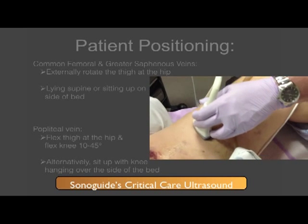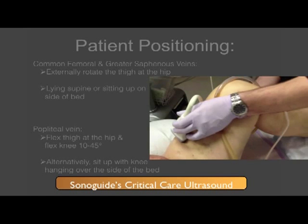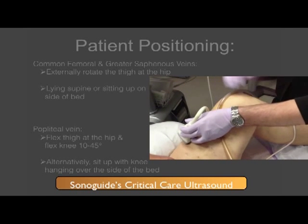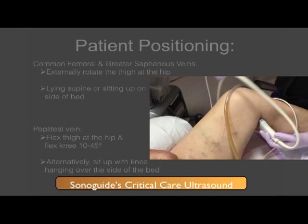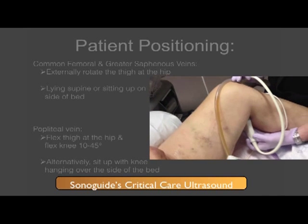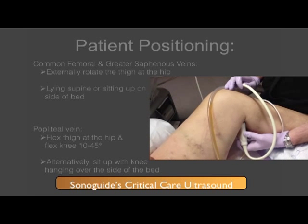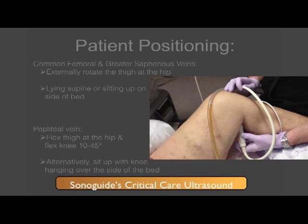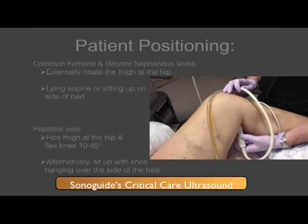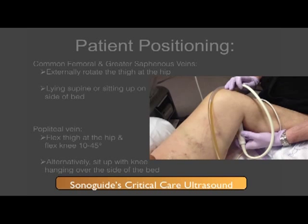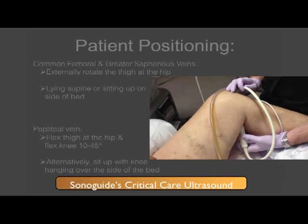For the popliteal vein, you can flex at the hip and the knee approximately 10 to 45 degrees. Alternatively, you can ask the patient, if able, to sit up over the side of the bed with their leg hanging down in order to access the popliteal fossa.